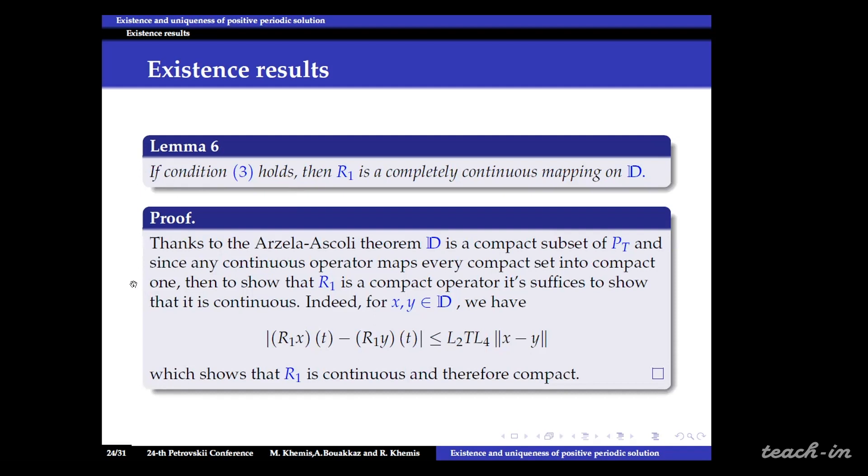The proof of this lemma is based on Arzela-Ascoli theorem. So by virtue of Arzela-Ascoli theorem, D is a compact subset of the Banach space. And since any continuous operator maps every compact set into a compact one, then to show that R1 is a compact operator it suffices to show that it is continuous. Indeed we have this estimation which shows that R1 is continuous and therefore compact.